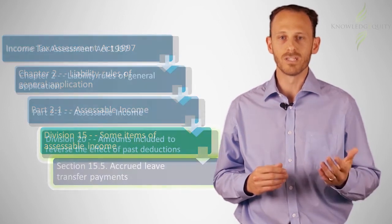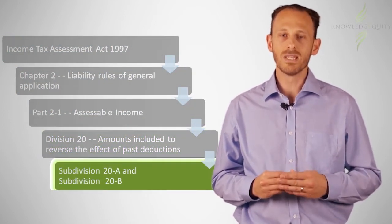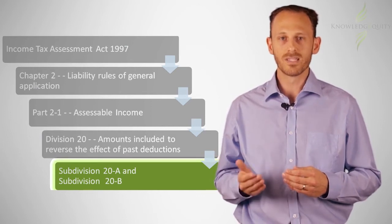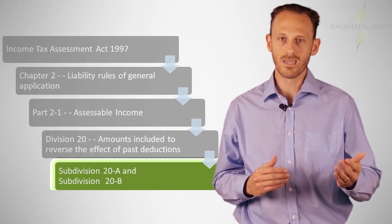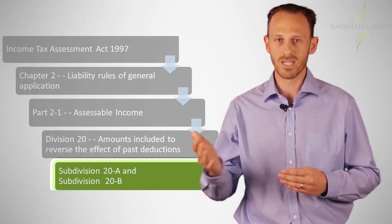Some divisions will have subdivisions in them. These will be numbered alphabetically. For instance, division 20 contains subdivision 20-A and subdivision 20-B.